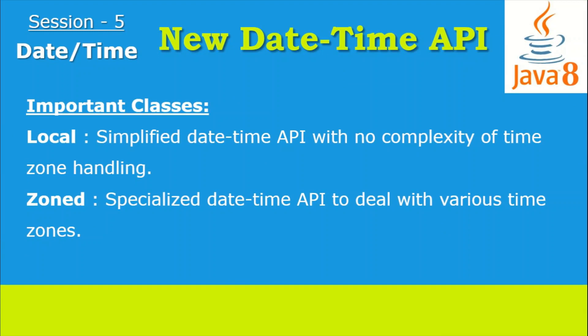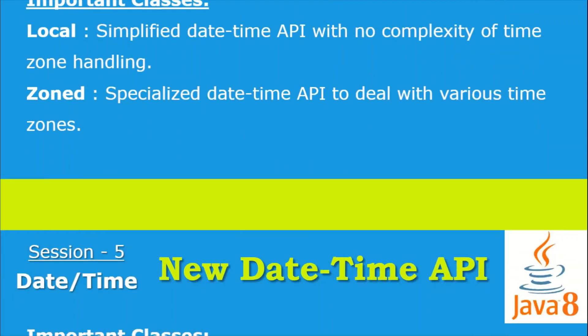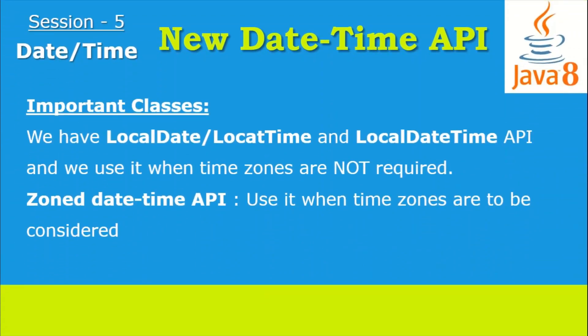Now let's see the most important classes introduced in the Java 8 new Date-Time API. The first category is Local — a simplified Date-Time API with no complexity of time zone handling; for that we use the local classes. The other category is Zoned — a specialized Date-Time API to deal with various time zones using the zone-level classes. We have LocalDate, LocalTime, and LocalDateTime, used when time zones are not required.